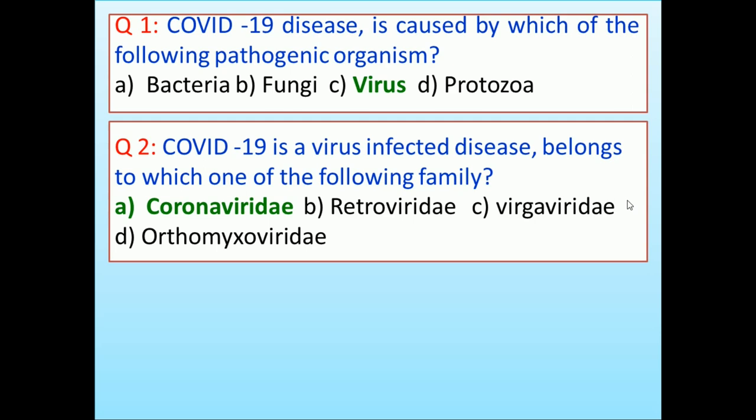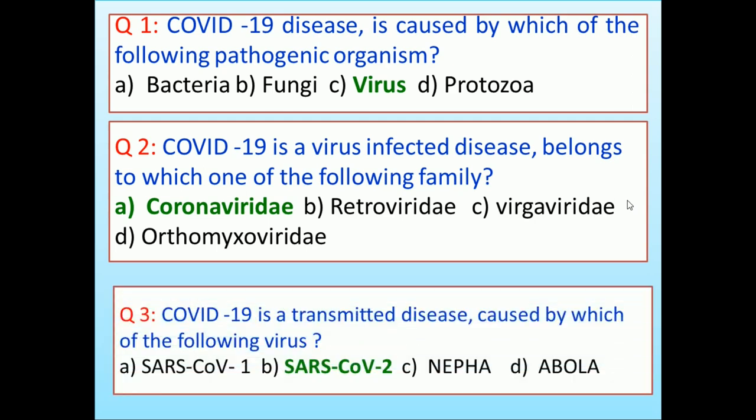COVID-19 is a transmitted disease caused by which of the following virus? SARS-CoV-1, SARS-CoV-2, Nipah, Ebola. Answer is SARS-CoV-2.